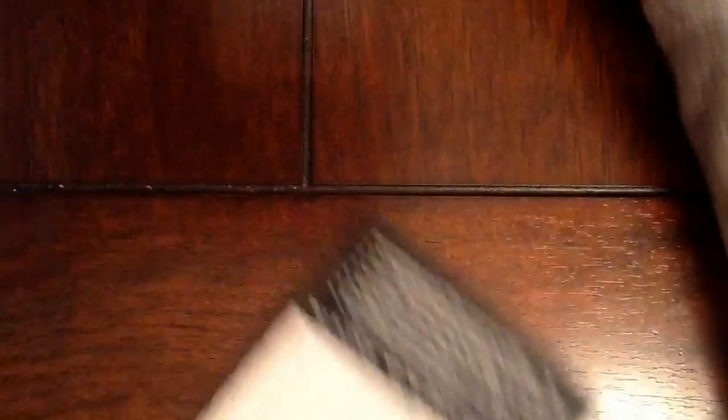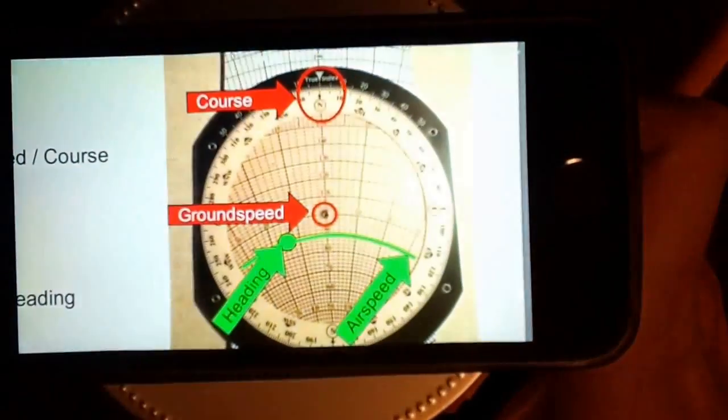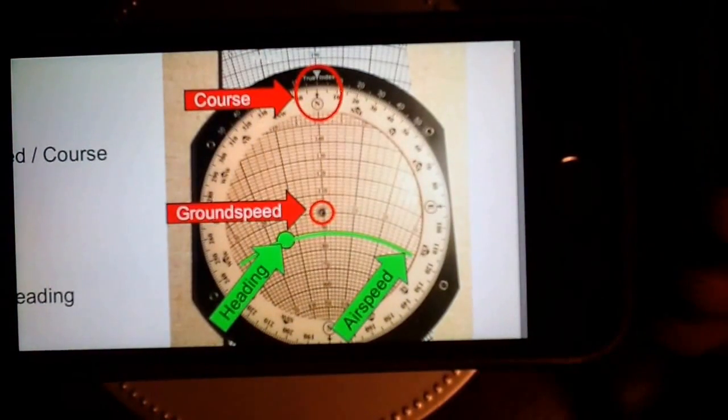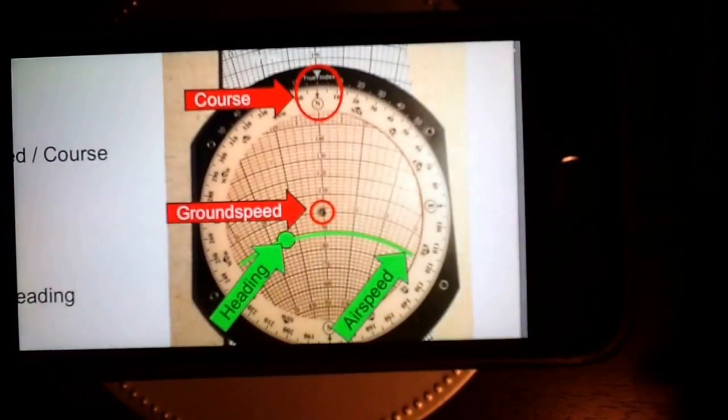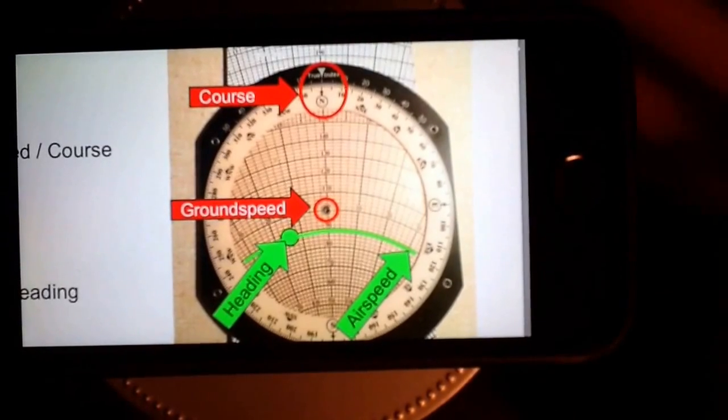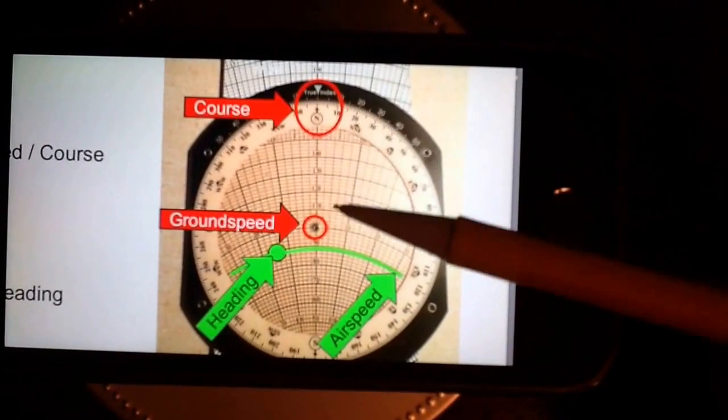Let's talk more about airplane mode before we do another problem. How can you remember how to set the card up in airplane mode? You can remember that these red items at the top are what the aircraft is actually doing over the ground.